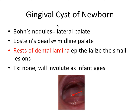We also have the gingival cyst of the newborn, which has some specific terminology: Bohn's nodules occur on the lateral palate, and Epstein's pearls occur on the midline palate. In this image, you can see a tiny white pearl on the midline palate — that's an Epstein's pearl. The origin is from rests of the dental lamina, a developmental structure that epithelializes these small lesions. Treatment is actually no treatment, as they will involute and go away as the infant ages.